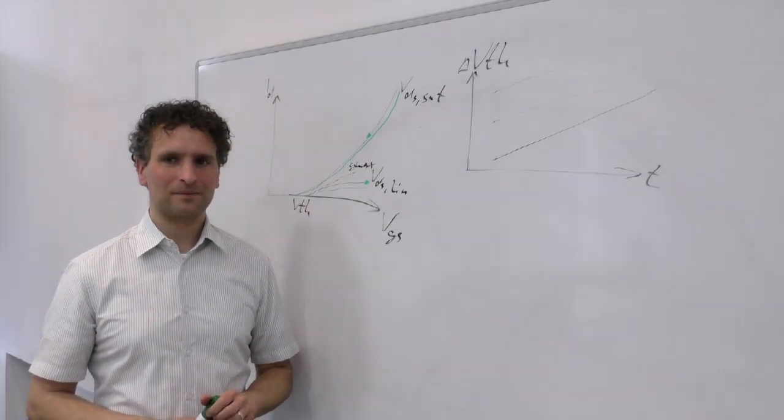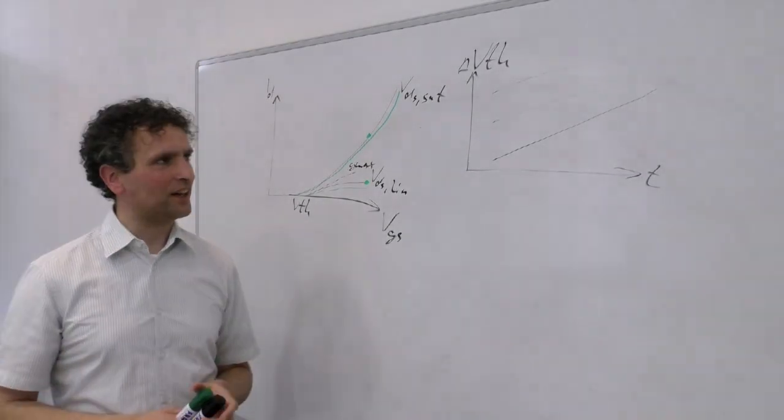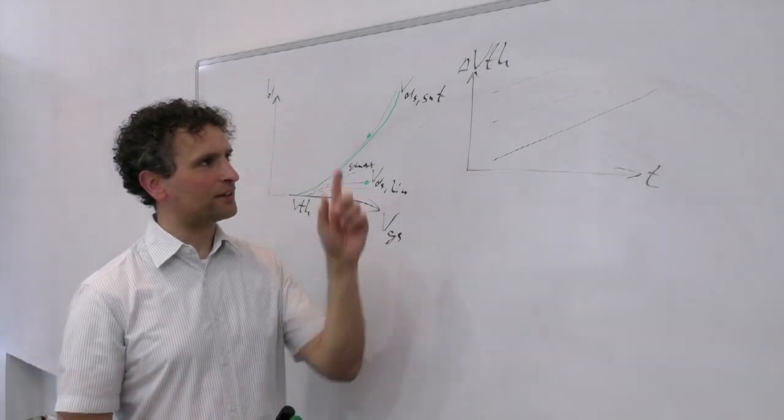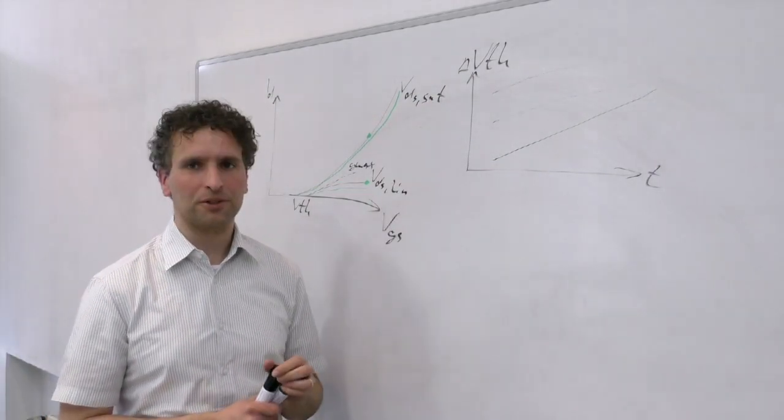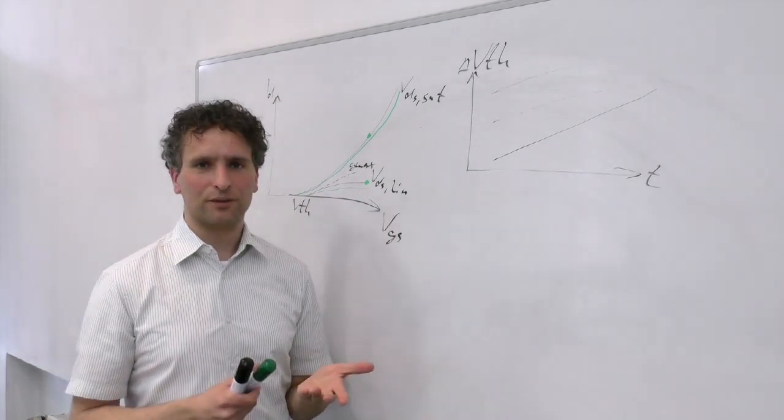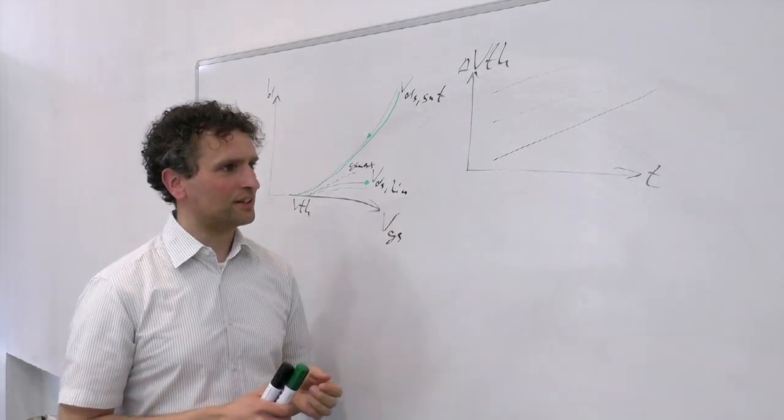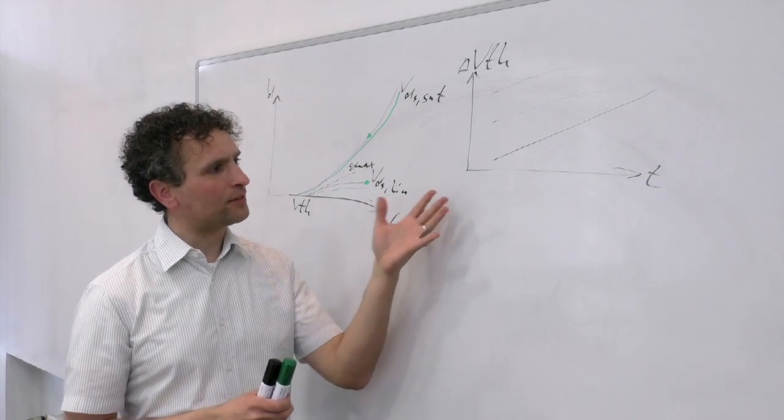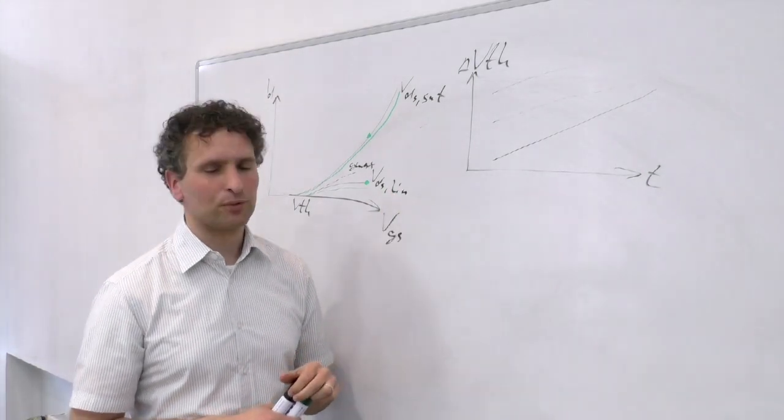So how do we move from the measurements to the modeling? For the IC designer now, the problem is that the sole shift in threshold voltage, or maybe the shift in ID-SAT or ID-Lin alone, is not sufficient for him.